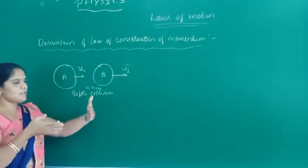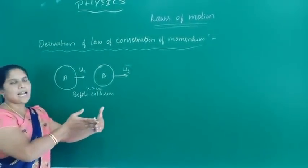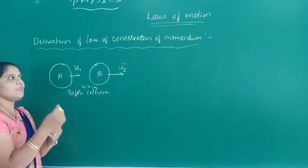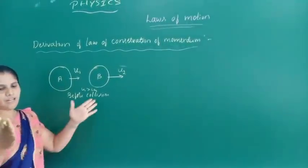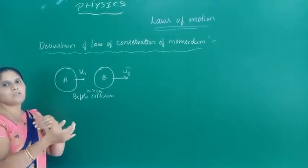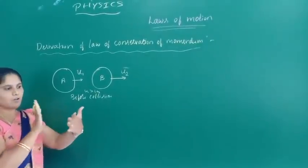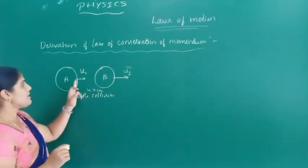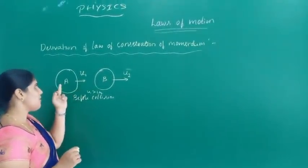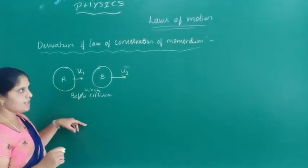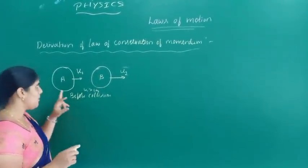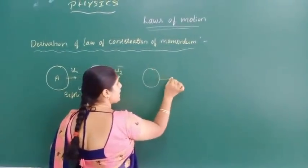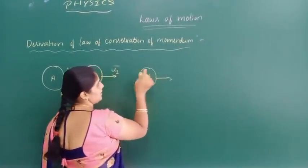Since U1 is greater than U2, after some time, object A collides with object B. After collision, the velocity of the objects gets changed.